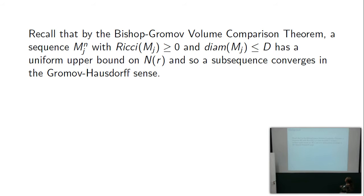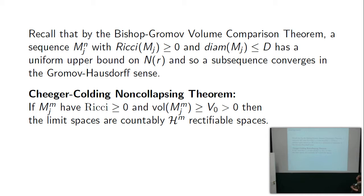The Bishop-Gromov Volume Comparison Theorem says that with Ricci bounded below and diameter at most t, you get a uniform upper bound on the number of balls, and then a subsequence converges in the Gromov-Hausdorff sense. Cheeger-Colding did a serious study of further properties of the Gromov-Hausdorff limit. They proved that if you have Ricci bounded below and volume bounded below uniformly, the limit spaces are countably H^m rectifiable of the same dimension as the sequence.